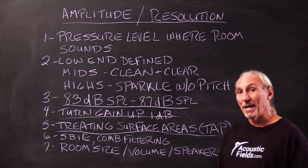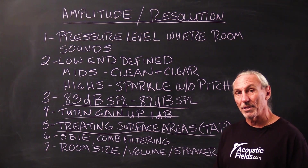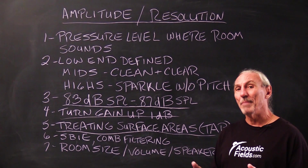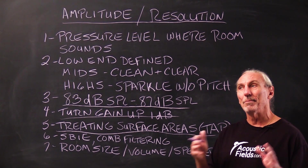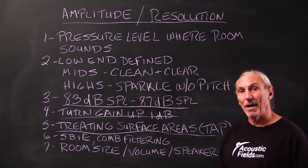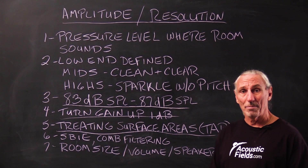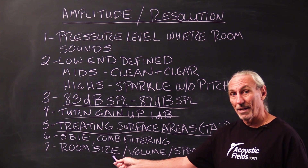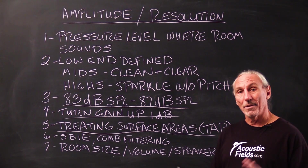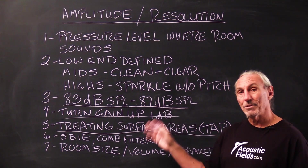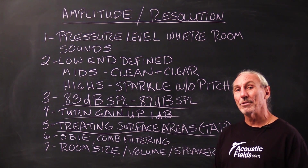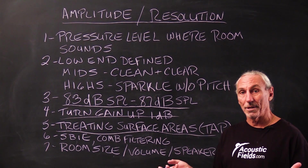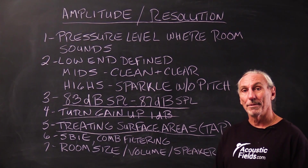You have to pay attention to detail and to the distortions in the room. There's no magic. A lot of people call me and say their last room sounded good at 83 to 85 dB SPL, but in their new room they can't hear anything at any pressure level. Then we start talking about the treatment they had in the last room, the size of the room, how much volume the room had — and immediately the differences come into play. There are reasons for everything. If you want a wider pressure range where the room sounds better, you can treat for it. It's always about surface area — always about adding more to treat the problem.